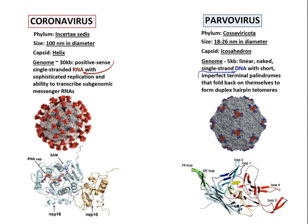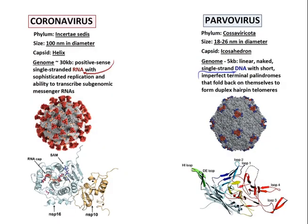Coronavirus is a helical single-stranded RNA virus, one of the largest viral genomes known to date, at 100 nanometers in diameter. The capsid of Parvovirus is icosahedral, and the genome is a non-enveloped single-stranded DNA with hairpin structures at both ends — very tiny, up to 26 nanometers in diameter. The root for the name 'parvo' means small. Parvovirus belongs to the phylum Cossaviricoda, while coronavirus has no distinct taxon above its class, and its phylum is named 'insertae sedis,' which in Latin means undefined or enigmatic.